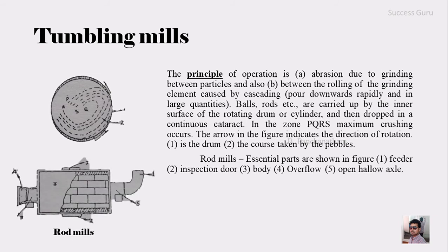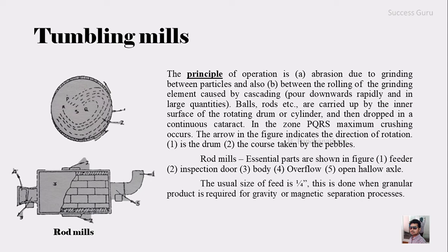This is the sketch of a tumbling mill — specifically a rod mill — where the essential parts are shown. You can see the feeder through which you put the material to be crushed, the inspection door from which you can check the quality of the resultant product, the body section where the grinding takes place, and the overflow from which the highly crushed material exits. The rod mill uses a feed size of 1/4 inch and is used where a granular product is required for gravity or magnetic separation.